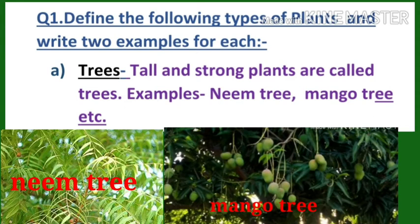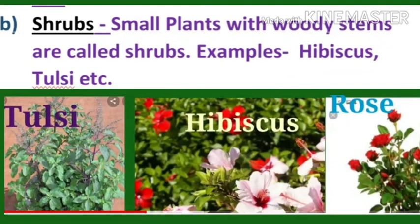Tall and strong plants are called trees. Examples: neem tree, mango tree, etc. Number B: Shrubs. Small plants with woody stems are called shrubs. Examples: hibiscus, tulsi, etc.